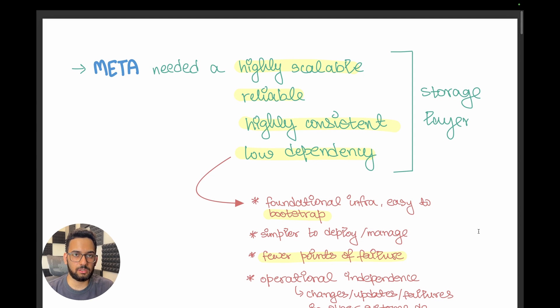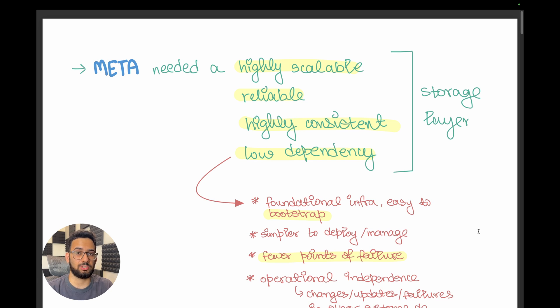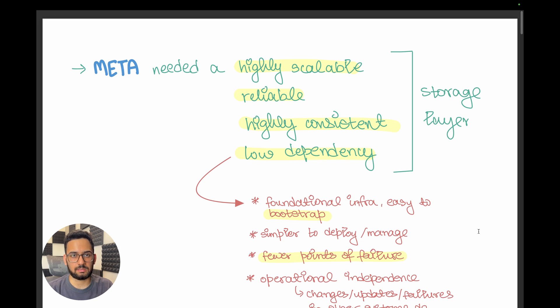Hey everyone. In this video we'll be discussing how Meta designed its build and distribution artifact storage layer called Delta to be simple, highly reliable, and strongly consistent.